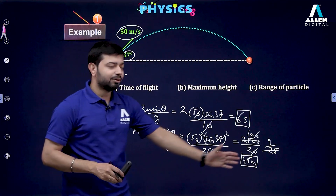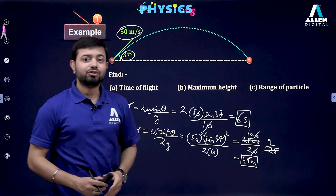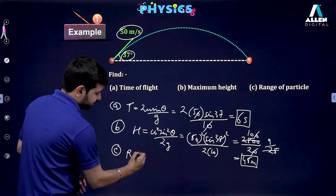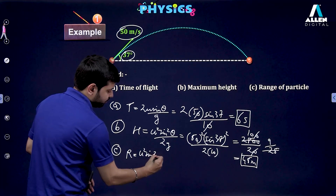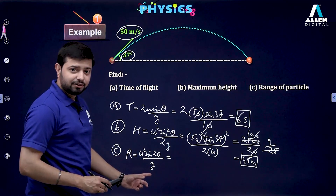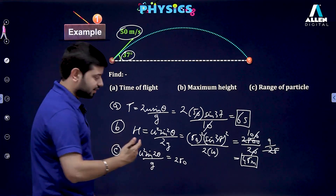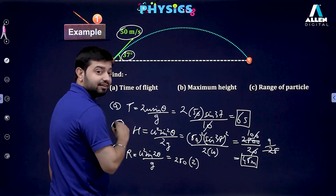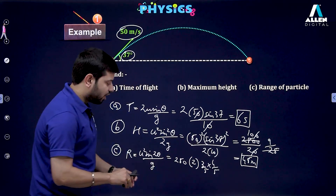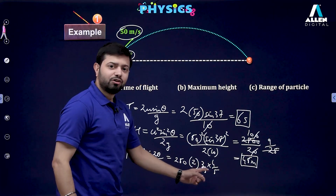For the range of the same projectile: R = u² sin 2θ / g = 2500 × 2 × sin 37° × cos 37° / 10 = 250 × 2 × (3/5) × (4/5) = 250 × 24/25 = 240 meters. So the three important parameters are: time of flight = 6 s, maximum height = 45 m, and range = 240 m.